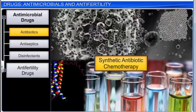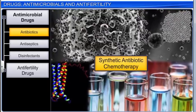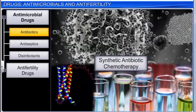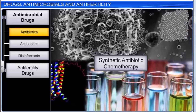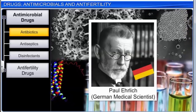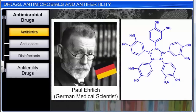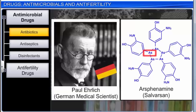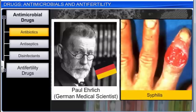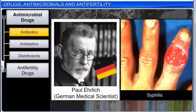Synthetic antibiotic chemotherapy as a science began in Germany with Paul Ehrlich, a German medical scientist. He found that a compound containing arsenic — arsphenamine, also known as salvarsan — was effective in the treatment of syphilis. His methodical search for a specific drug to treat a specific disease marked the beginning of targeted chemotherapy.